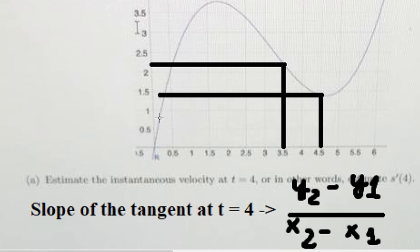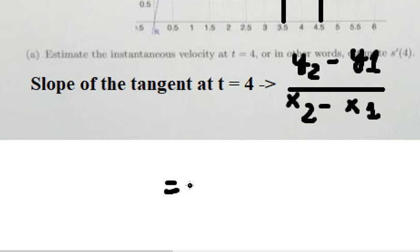This value here is about 1.5. This one, between 2.5 and 2, is about 2.25. Now we put the numbers in.